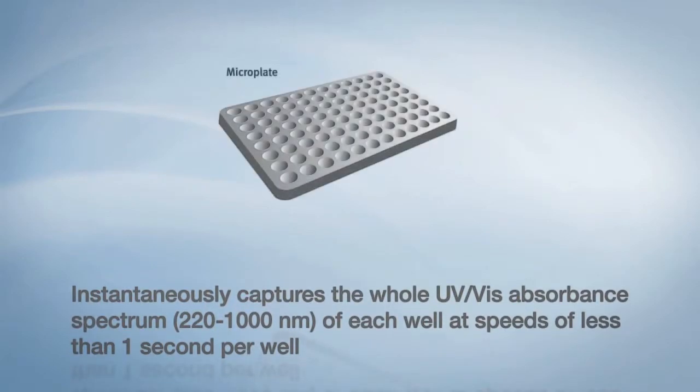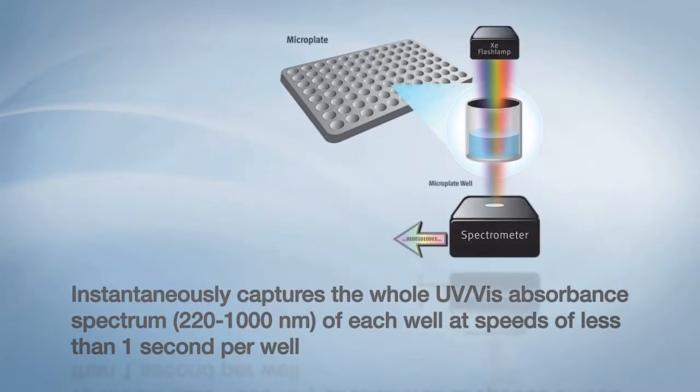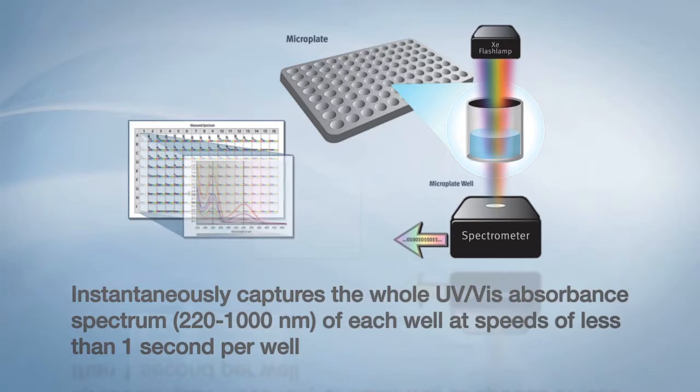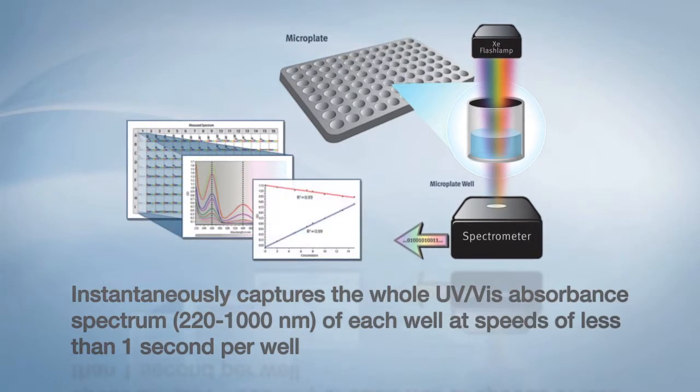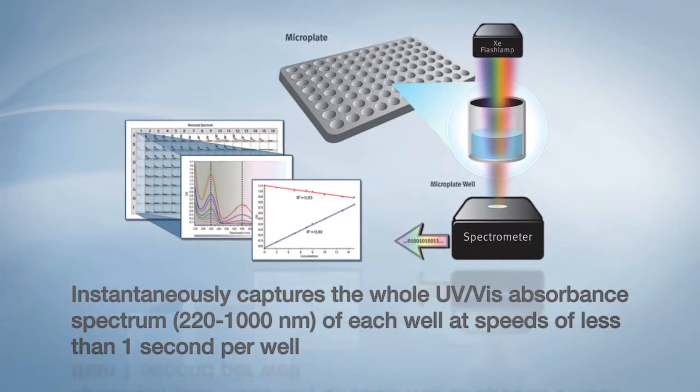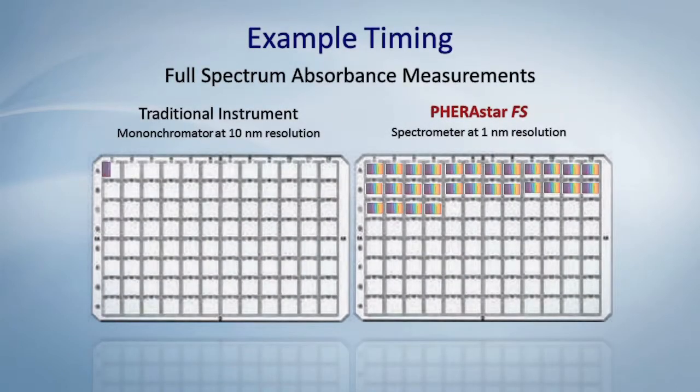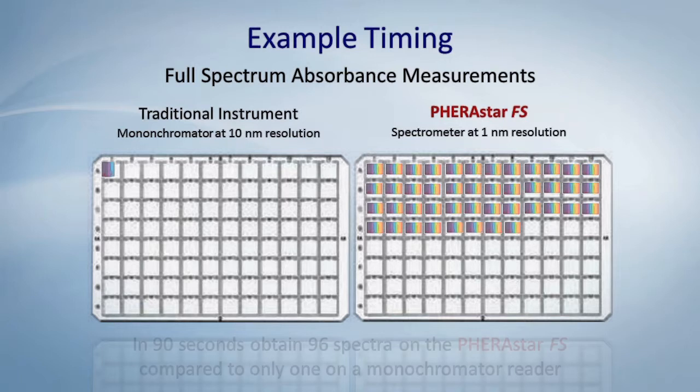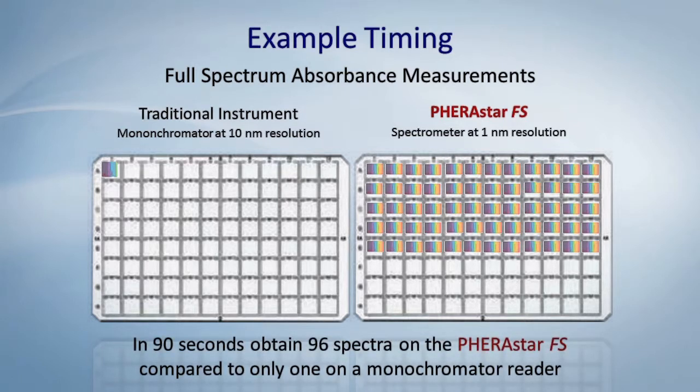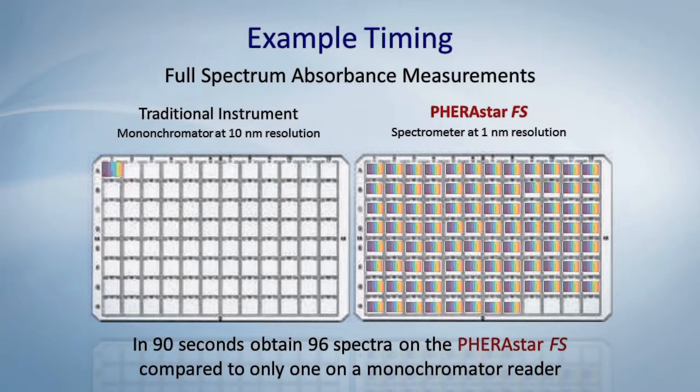For flexibility, the Ferristar FS has an absorbent spectrometer that enables convenient selection of any wavelength from the low UV up to the near infrared with one nanometer resolution. The spectrometer allows you to collect an entire UV visible spectrum in less than one second per well. Never select wavelengths again. You can have all wavelengths all the time.